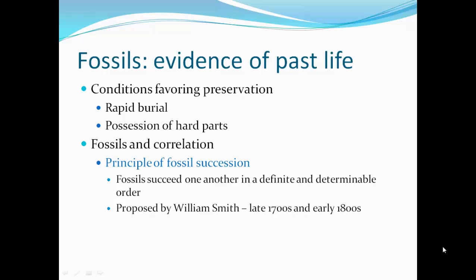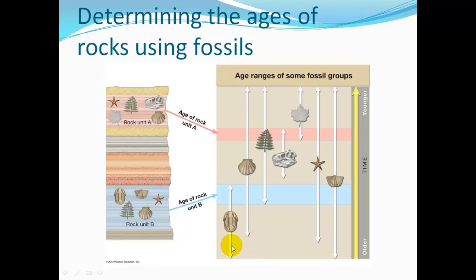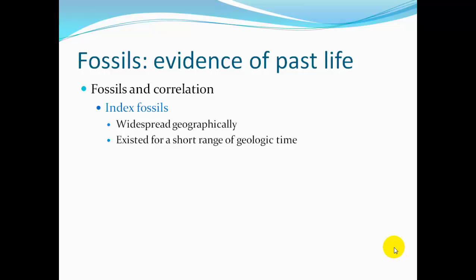Fossils in correlation — we have another rule: the principle of fossil succession. Fossils succeed one another in a definite and determined order, proposed by William Smith in the late 1700s to early 1800s. Certain fossils only lived during a certain time period. For example, trilobites existed in an older period; scallops started sometime during the trilobite's age range and continue to modern times; ferns existed until sometime after scallops started; dinosaurs had their time period; and maple leaves until a certain time period. By knowing which fossils were around during certain time periods, we can correlate which rocks were of the same age. What we need are index fossils — those that are widespread geographically but existed for only a short range of time. We can find them all over the world, but we know a very short period of time where they lived, and that helps dramatically with correlating rock layers.